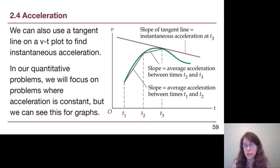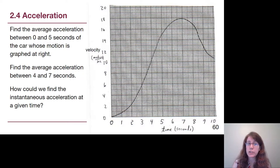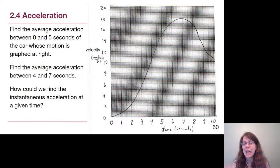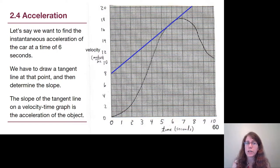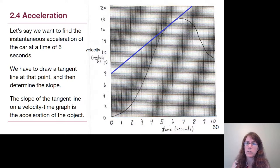To find the average acceleration between 0 and 5 seconds, we look at the final and initial points and plug numbers into the equation. To find the average acceleration between 4 and 7 seconds, we find those two points and plug those numbers in. For instantaneous acceleration at a given time — for example at 6 seconds — we must draw a tangent line and then choose two points on that line to find the slope.